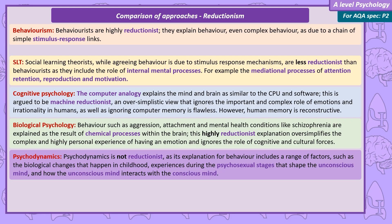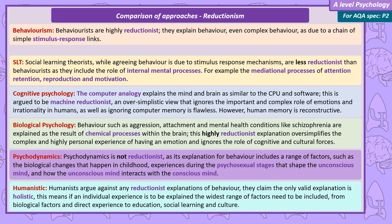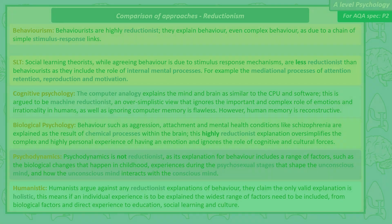Psychodynamics is not reductionist, as its explanation for behaviour includes a range of factors such as the biological changes that happen in childhood, in addition to experiences that shape an unconscious mind, and how the unconscious mind interacts with the conscious mind. Humanists argue against any reductionist explanation of behaviour, claiming the only valid explanation is holistic — meaning the widest range of factors must be included, from biological factors and direct experience to education, social learning, and culture.